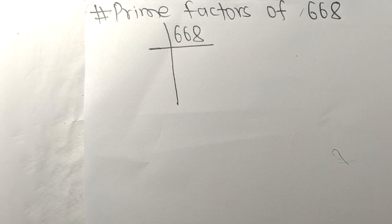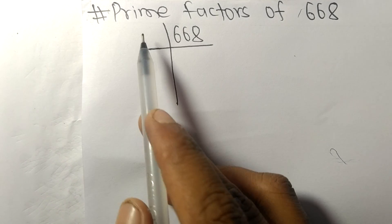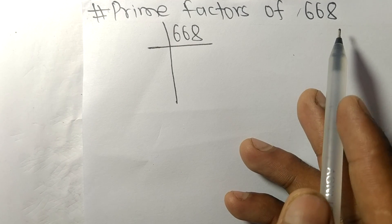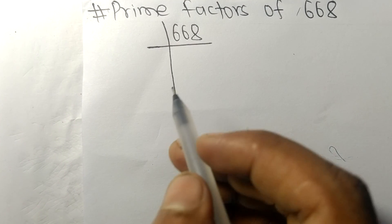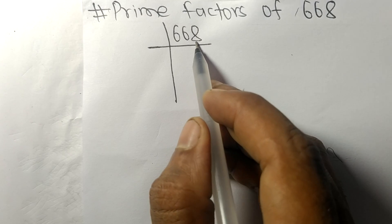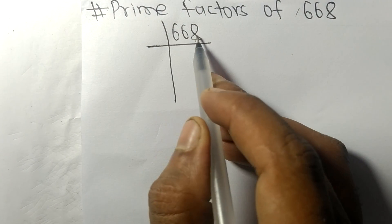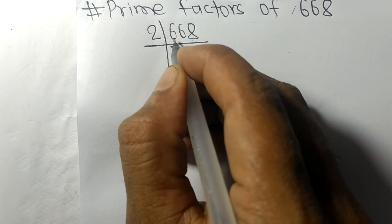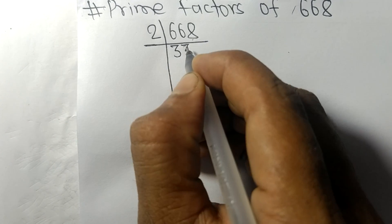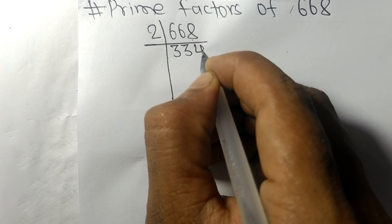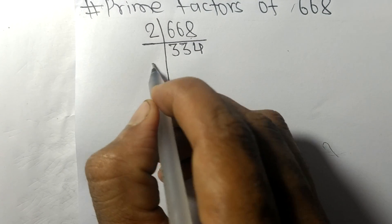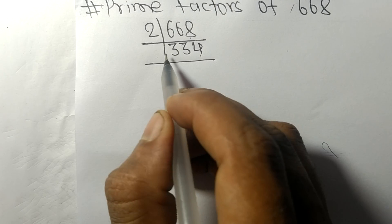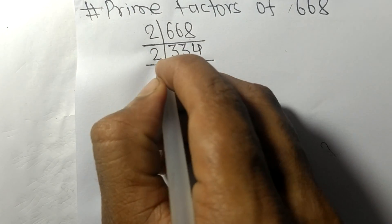Today we shall learn to find the prime factors of 668. It contains an even number 8 at the end, so these whole numbers are divisible by 2. 2 times 3 means 6, 2 times 4 means 8. Again it has an even number 4 at the end, so it is divisible by 2 again.